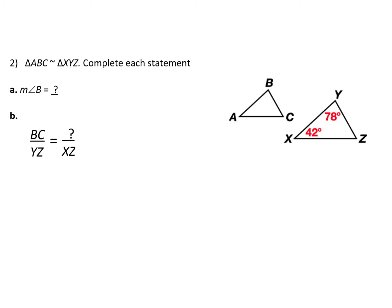Using our similarity statement, since angle B is the second vertex in the statement, angle Y is the second vertex in the other triangle. So angle B and angle Y should be the same, meaning angle B is 78 degrees. BC are the last two points in the statement, and the last two points in the second statement are YZ, so BC matches to YZ. XZ are the first and last points, so the first and last points in the similarity statement are AC, meaning AC corresponds to XZ.